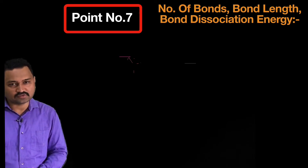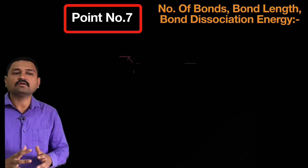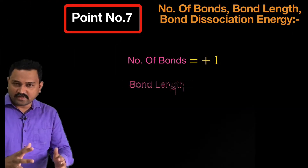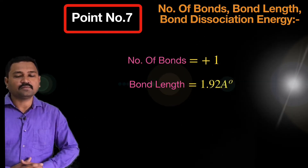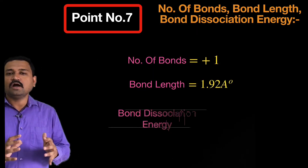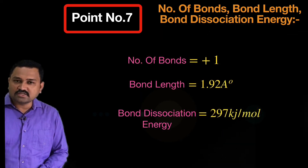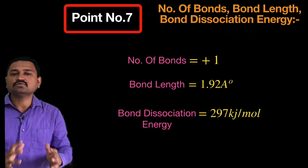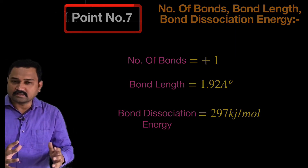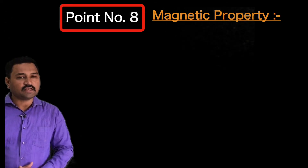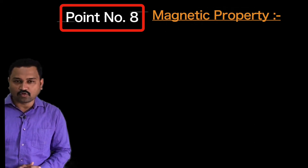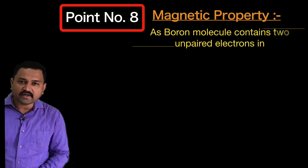Point number seven: the number of bonds, bond length, and bond dissociation energy. The number of bonds equals one, as the bond order is one. The bond length is 1.924 Å, and the bond dissociation energy for the boron molecule is 293 kJ/mol. This is our point number seven.